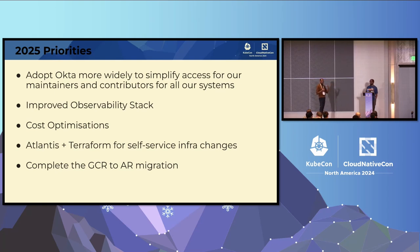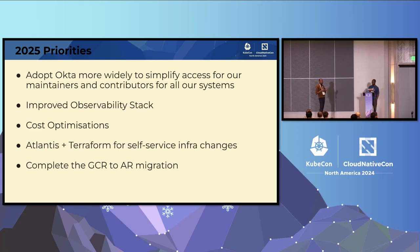There's the GCR to Artifact Registry migration, which we need to achieve since GCP is deprecating the product. The last thing we're trying to do is self-service infrastructure consumption — currently, to get specific resources, the community needs to reach out to the SIG to create them. We'd like to stop doing that by providing more automation and using infrastructure as code to bootstrap infrastructure, which is a pattern that most platform engineering teams are following.